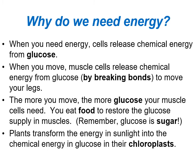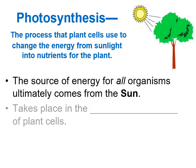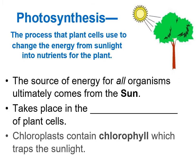Plants transform the energy in sunlight into chemical energy in glucose in their chloroplasts. The process that plant cells use to change the energy from sunlight into nutrients — into glucose, that sugar — is called photosynthesis, as we learned on Friday.